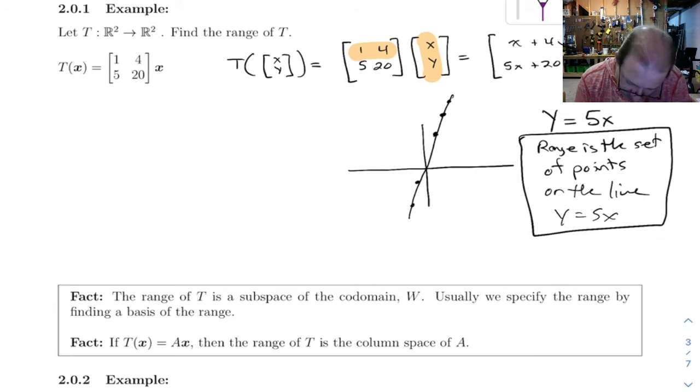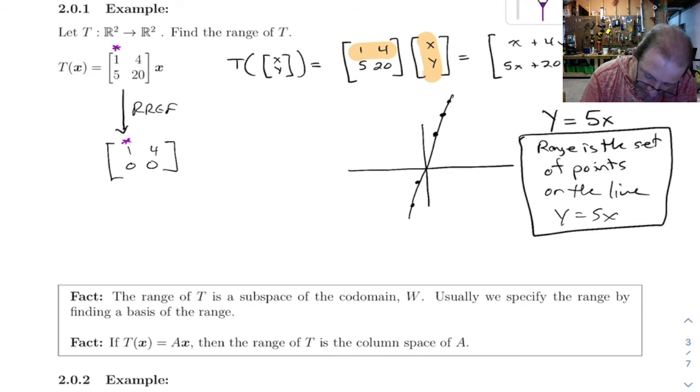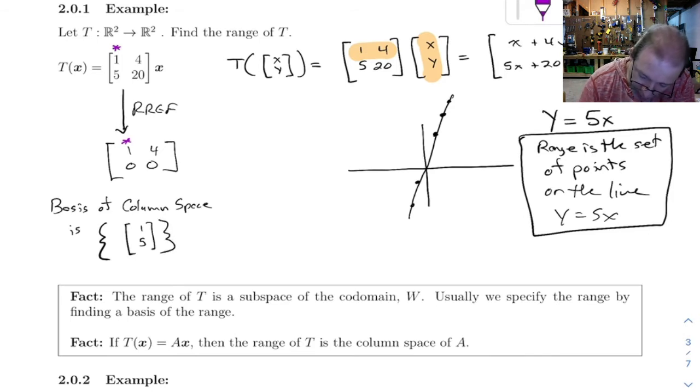And this next fact is good. It says if T of x is equal to A times x, the range of T is the same thing as the column space of A. So let's go back up here and look at the column space of this. If we were to find the column space, remember what you do is you row reduce it. If we do that, we get 1, 4, 0, 0, because the only thing you have to do here is do row 2 minus 5 row 1, and it'll zero that bottom row out. And so if you look at this, we've got a leading one here, so we're going to come back up here, and we'll get a basis of the column space consists just of the vector 1, 5. Remember for column space, you've got to go back to the original matrix. And so 1, 5 is a vector that lies on this line, and so the basis of the column space is also a basis of the range.